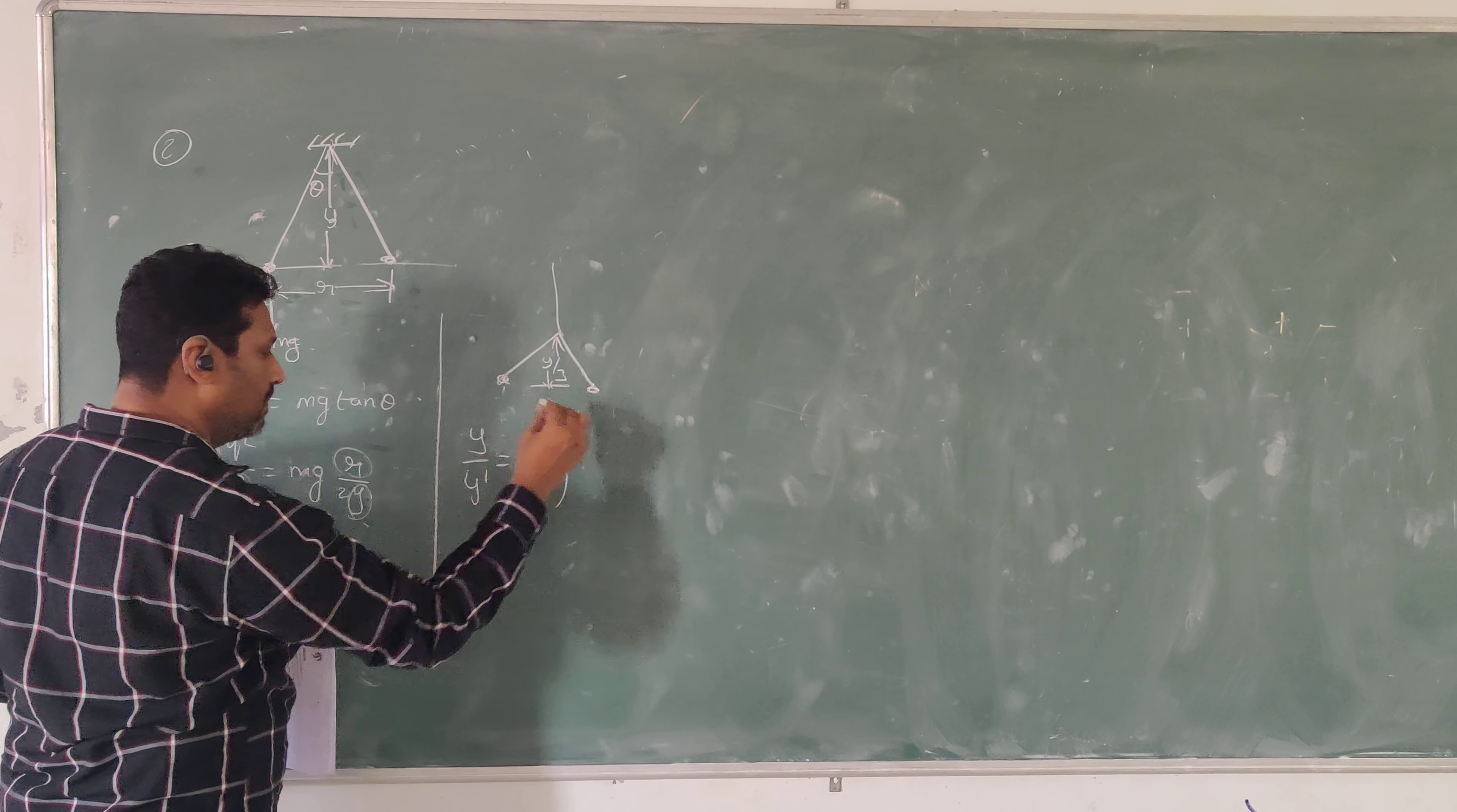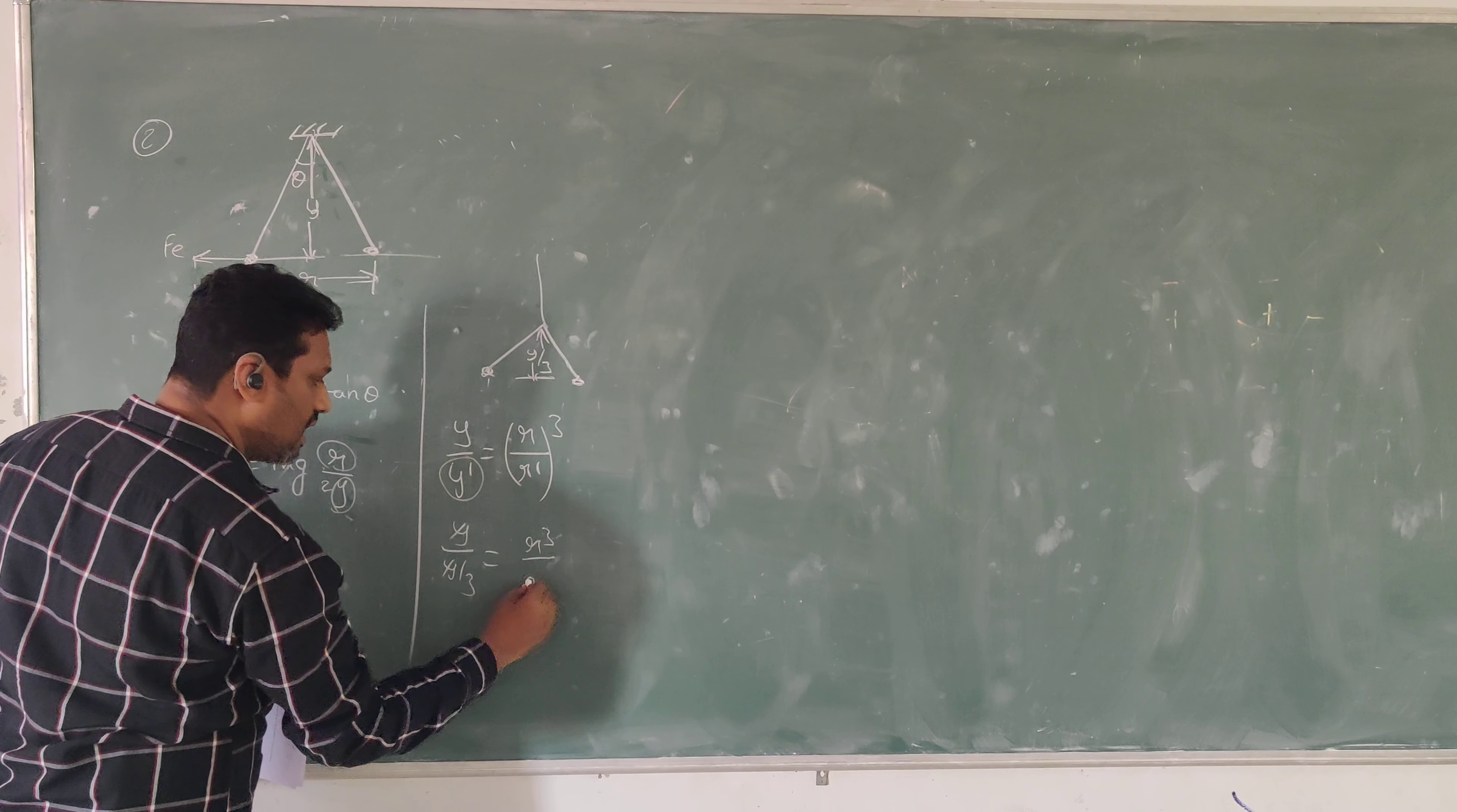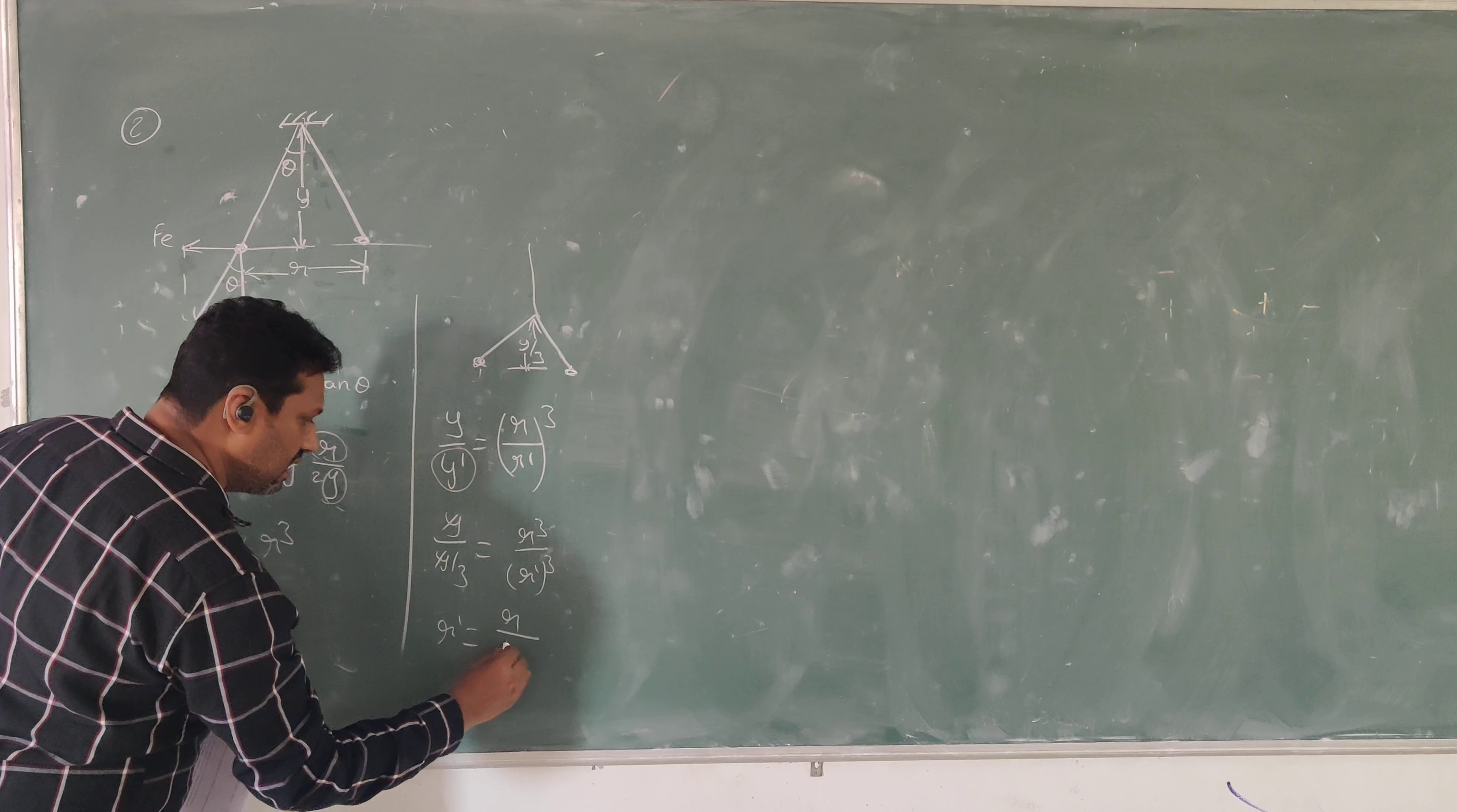Y dash is given as y by 3. Canceling y, we get r cubed by r dash cubed. Then r dash equals r divided by 3 to the power of 1 by 3, or r by cube root of 3. This is the answer.